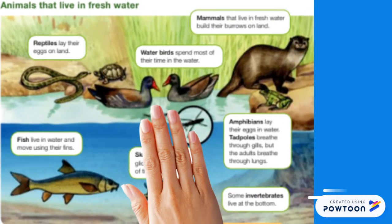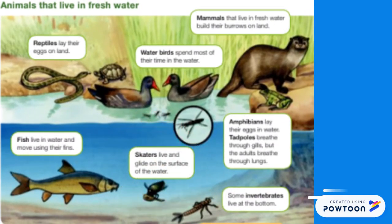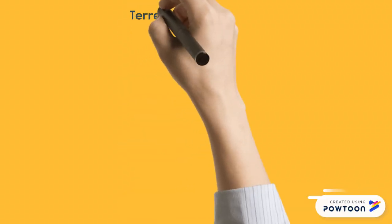Other aquatic animals live in fresh water such as rivers or lakes. You can see reptiles, birds, mammals. A very interesting thing is that skaters live and glide on the surface of the water.